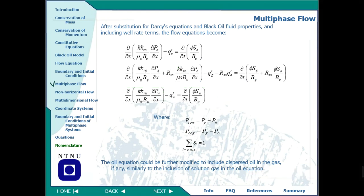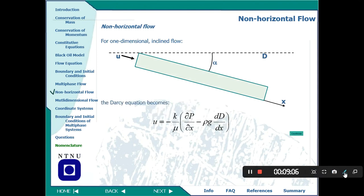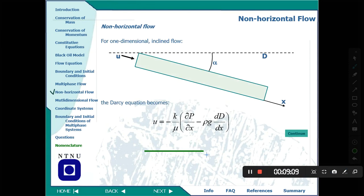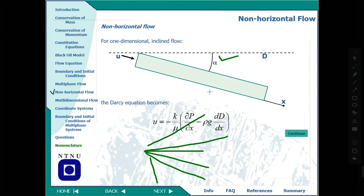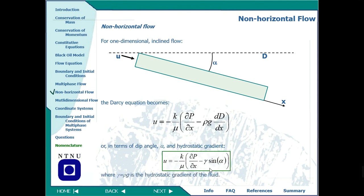Oil does not always flow in a straight direction; it may flow at various angles. In the Darcy equation we must account for this inclination. We add the dip angle to the equation so the final equation for non-horizontal flow includes the angle term. The equation is updated to include the straight-line component and the angular component expressed as the dip angle.